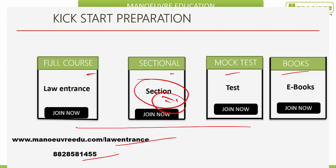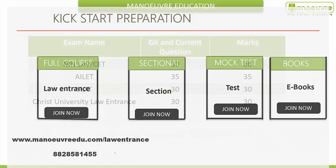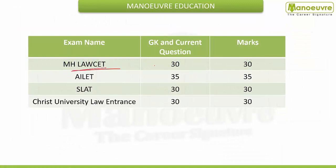First we will see the number of questions and what will be the nature of the paper. For MH Law CET, there will be 30 questions from the GK and Current Affairs section for 30 marks — one question for one mark. For AILET, All India Law Entrance Test, there will be 35 questions for 35 marks. For SLAT for Symbiosis, 30 questions for 30 marks. And for Christ University Law Entrance, 30 questions for 30 marks. So you can understand the importance of this section.